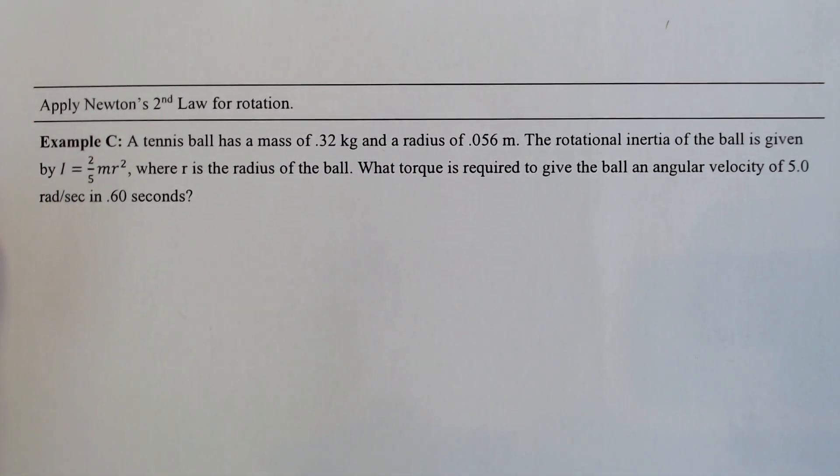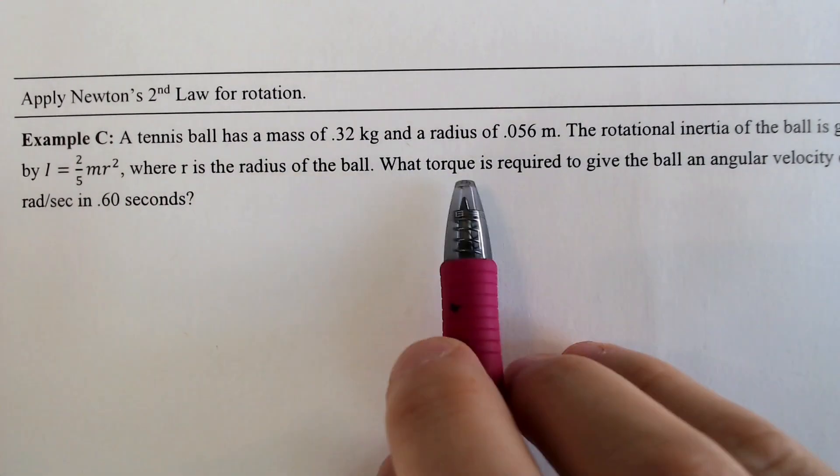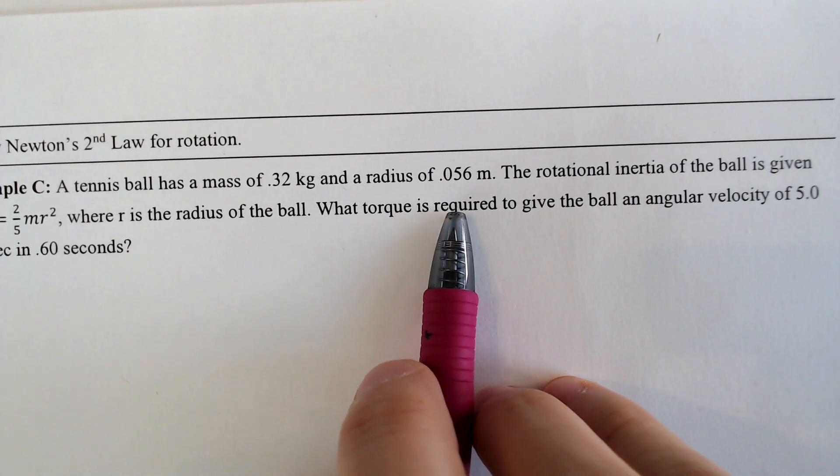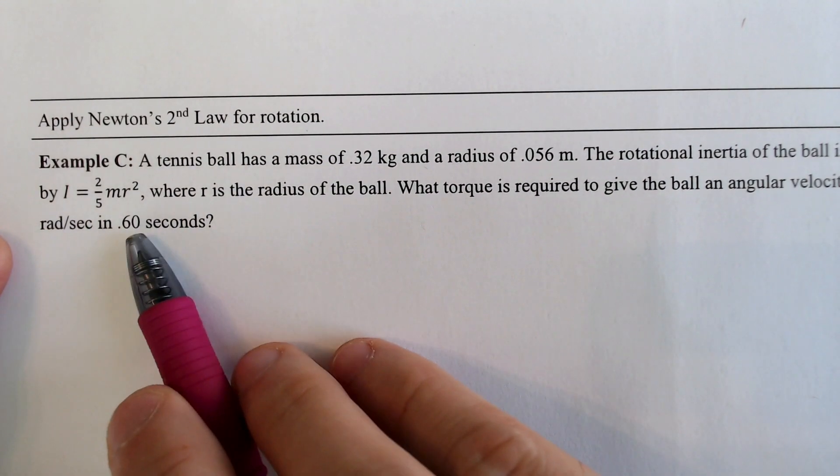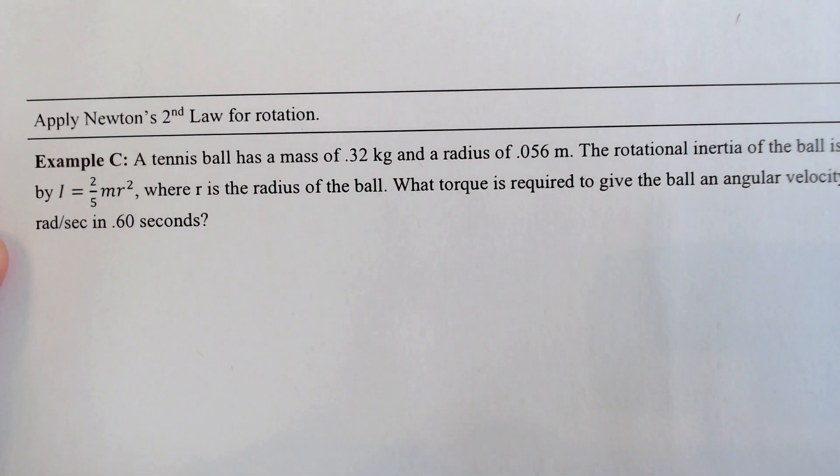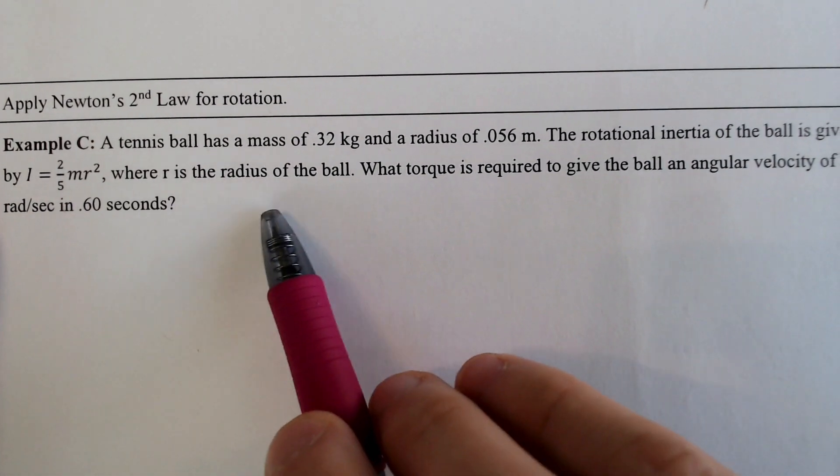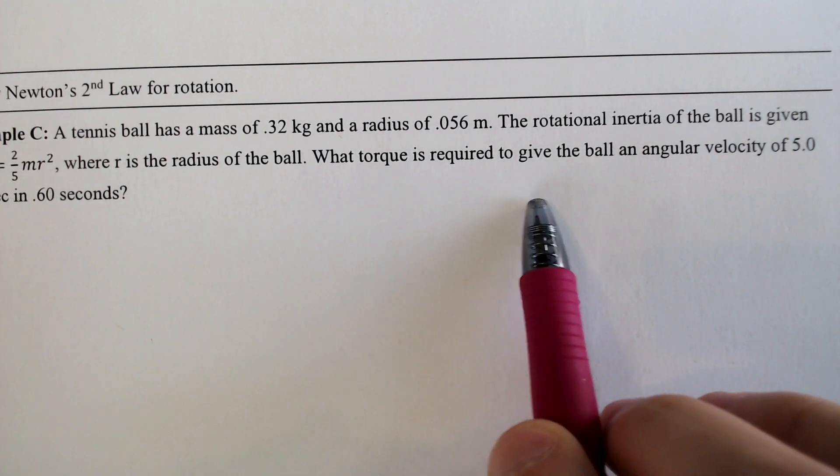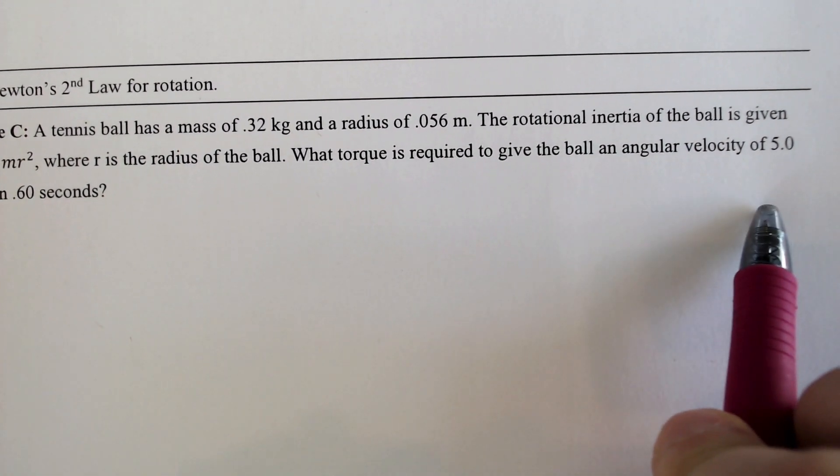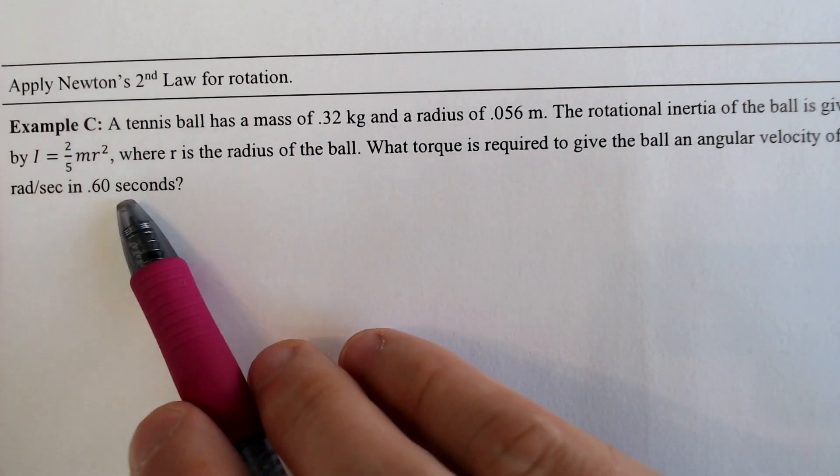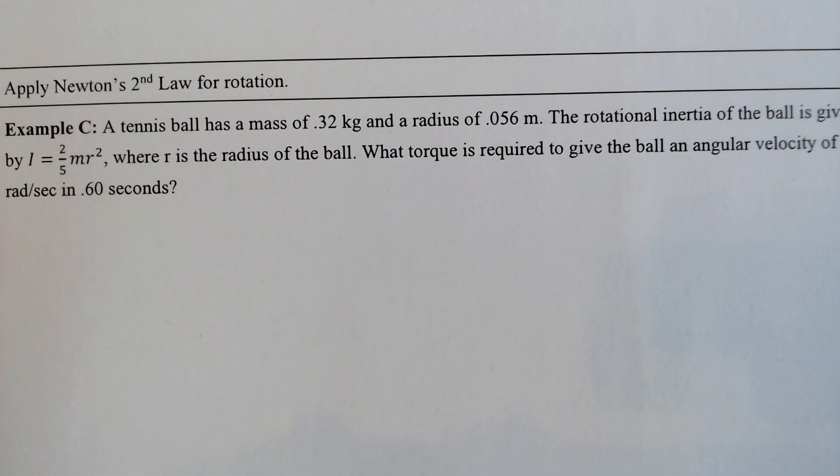This first one, we got a tennis ball. It has a mass of 0.32 kg and a radius of 0.056 m. The rotational inertia of the ball is given to us: two-fifths MR squared. Very convenient and nice. You're not going to have to memorize that. That would be insane. Where R is the radius of the ball. What is the torque required to give the ball an angular velocity of five radians per second in 0.6 seconds?